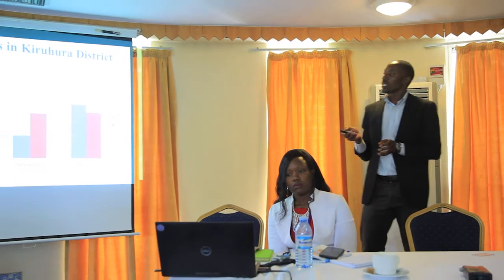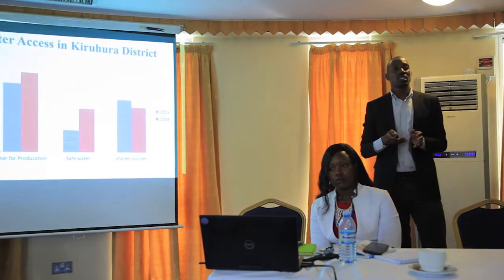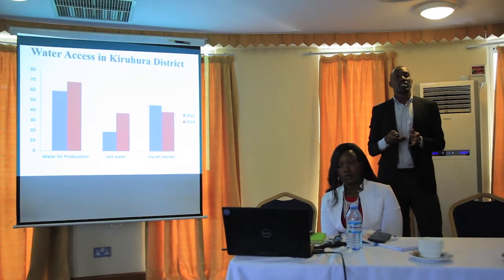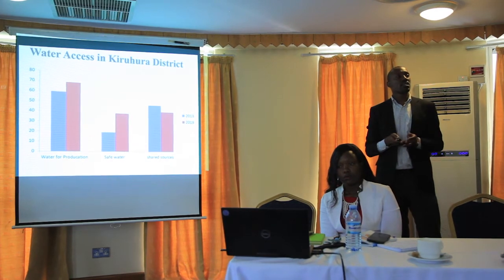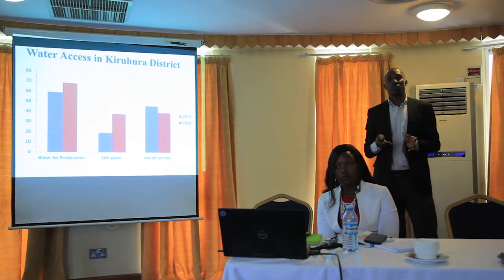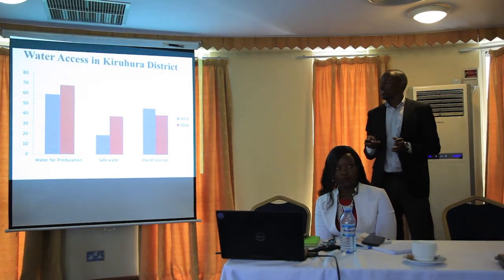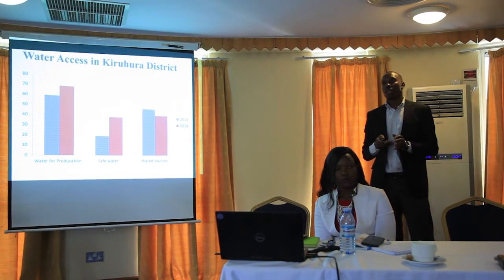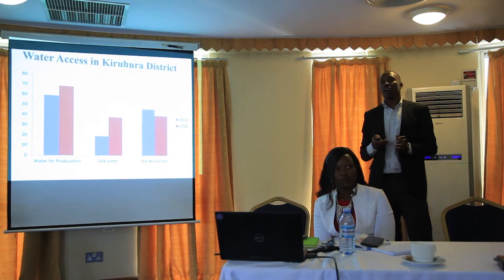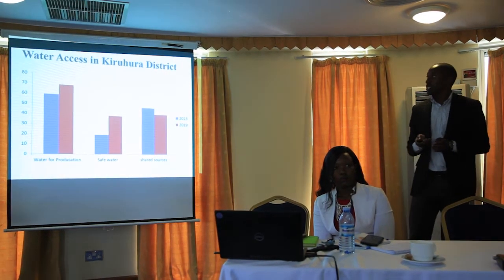Water access in Kiruhura exists in two ways: there is water for production, safe water, and shared sources. On the source of water for production, because it is a community that grazes animals, animals are considered more important, and so they have more open water sources in the form of dams than safe water, which may be boreholes and piped water systems.